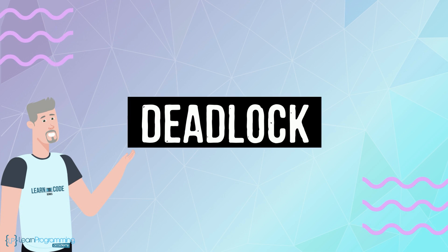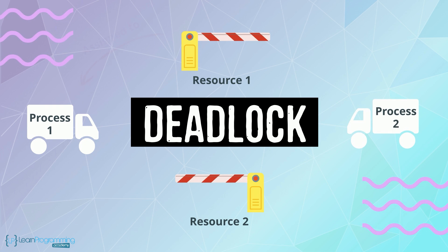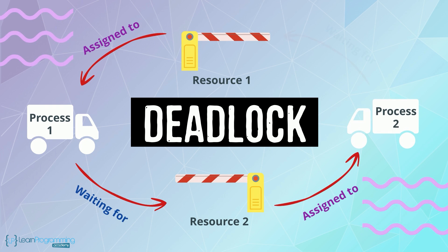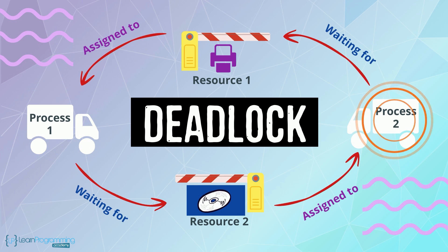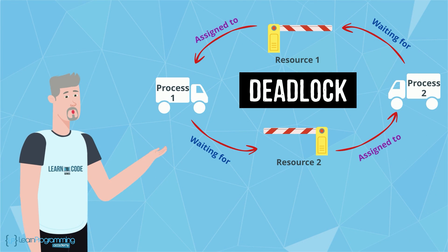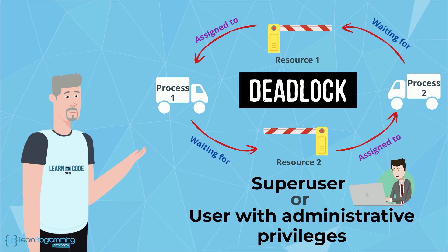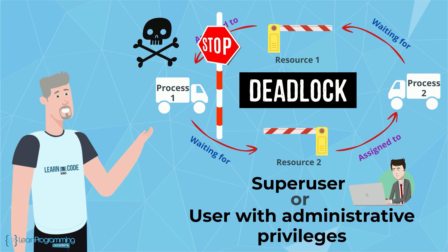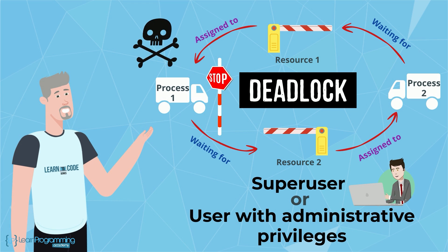Another issue that could arise is known as deadlock. This occurs when two or more apps are blocked from progressing because each is waiting for a resource allocated to another app. For example, one app has access to the printer while waiting for the DVD player, and another app has access to the DVD player while waiting for the printer. Deadlocks are not very common today, but when they occur a superuser or user with administrative privileges may be required to kill at least one of the apps — 'kill' being the term used for such situations in computing.